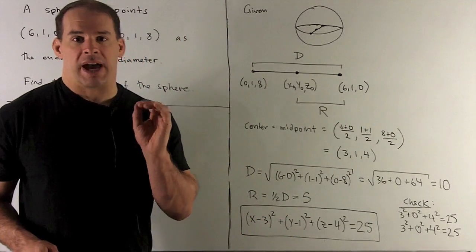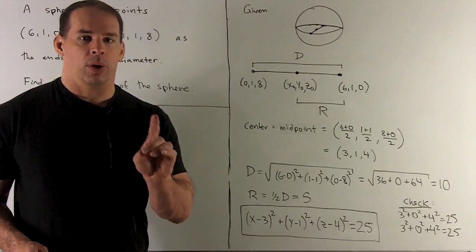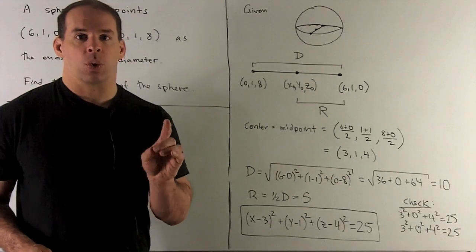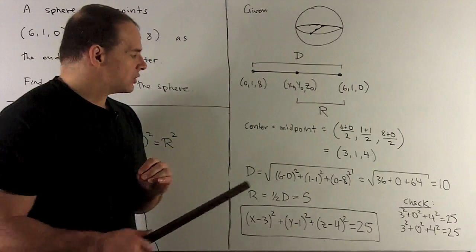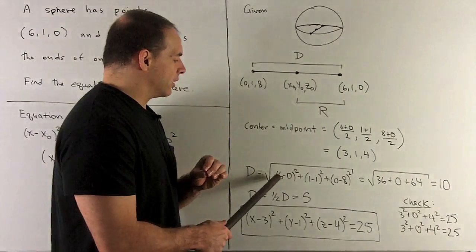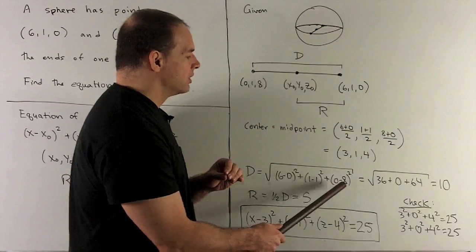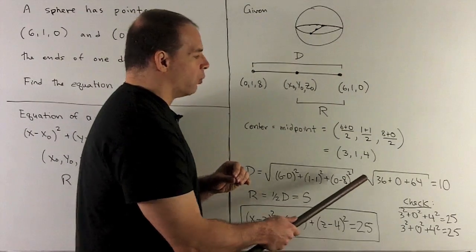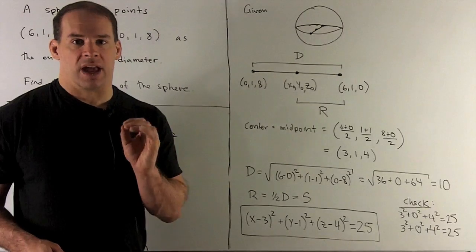Now I want the length of the diameter. So to get that, we're going to take our two points, take the difference in each coordinate, square, sum, and then square root. So we're going to wind up with, taking our differences and squaring, 36, 0, 64. So I'll have 100, I take the square root, I get 10. That's the length of the diameter.